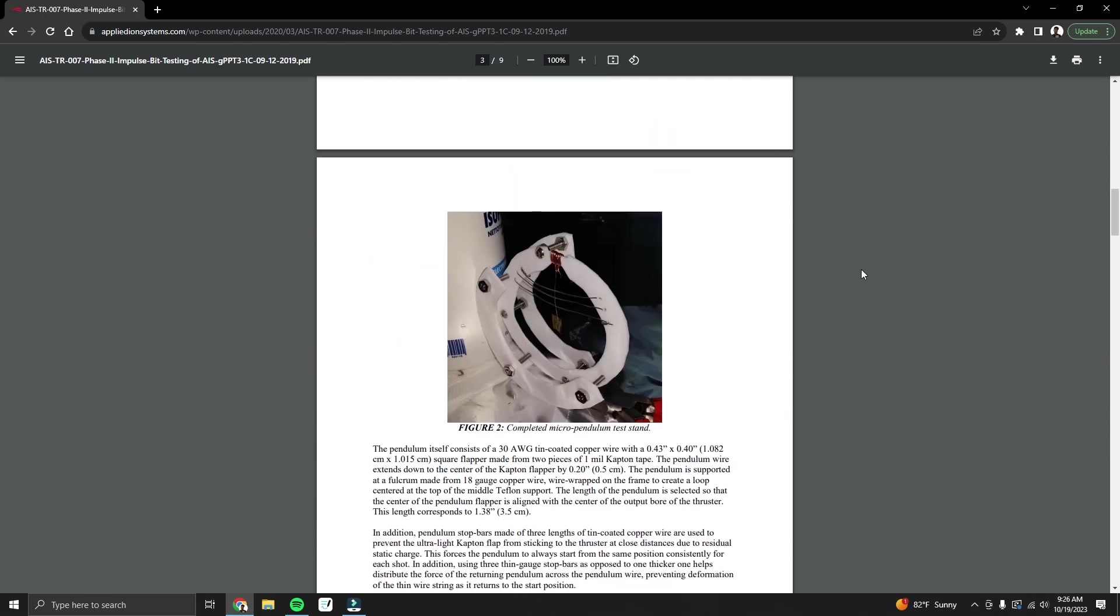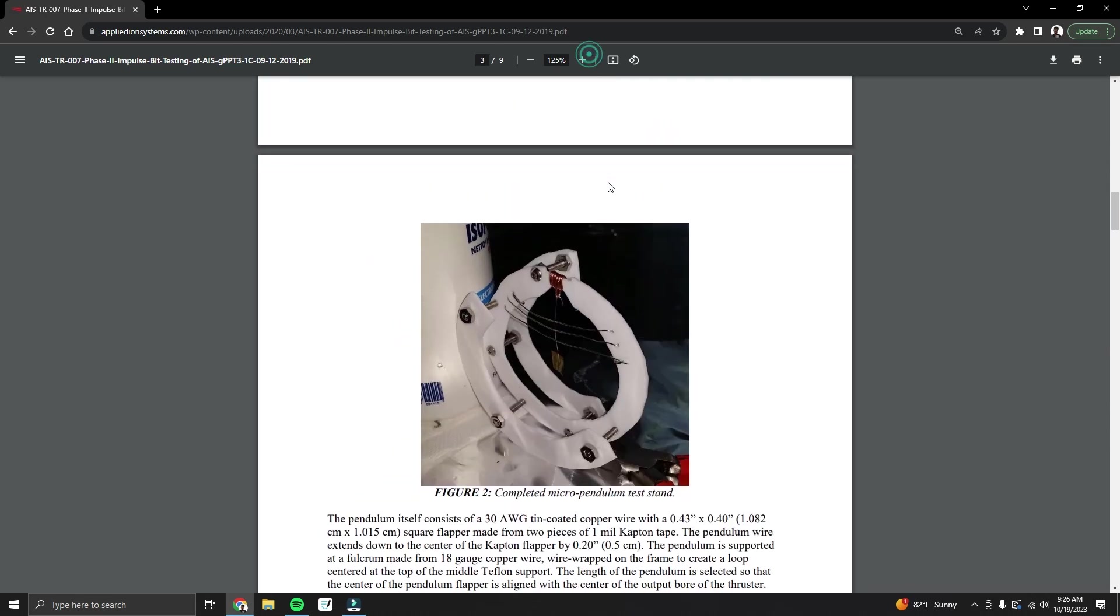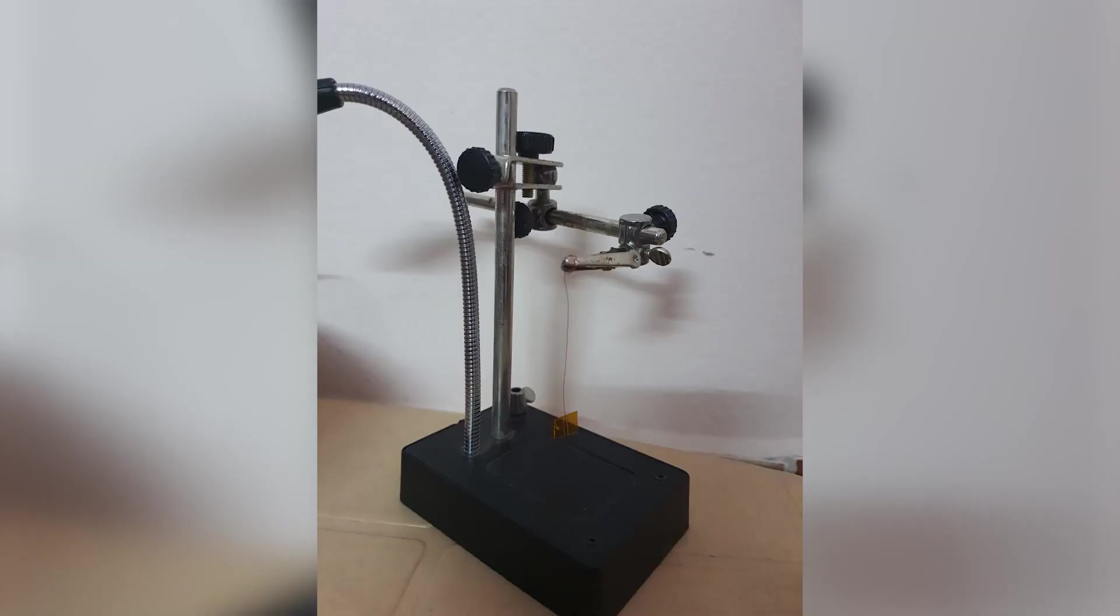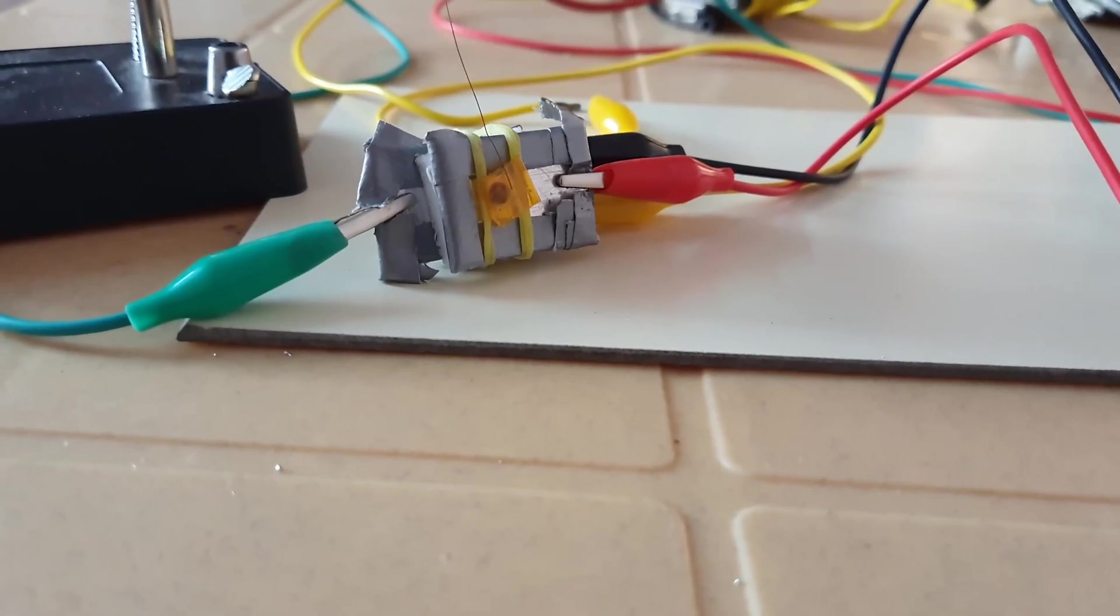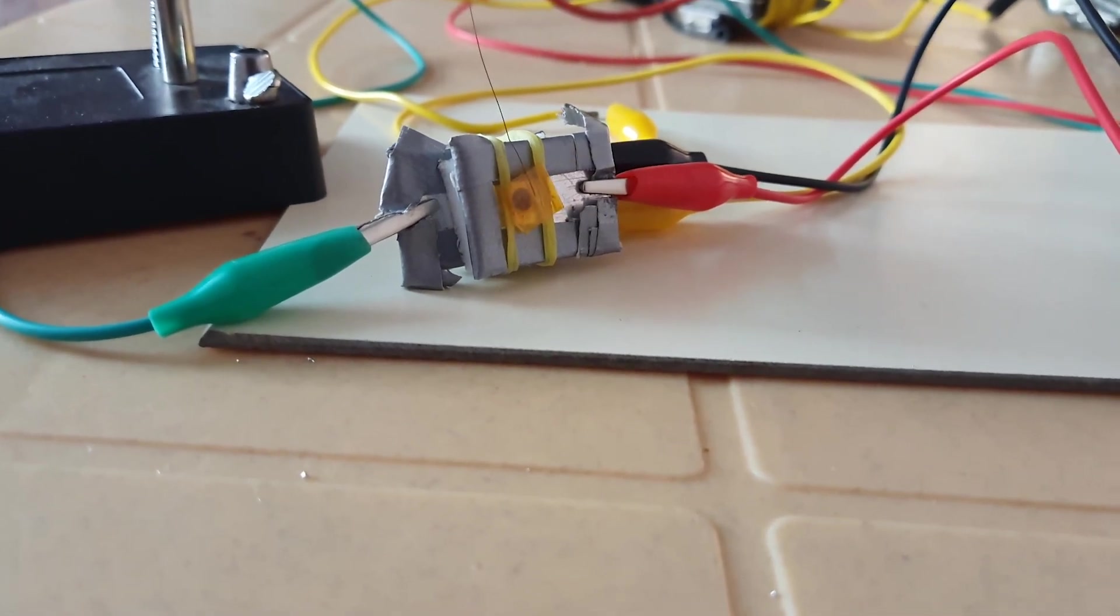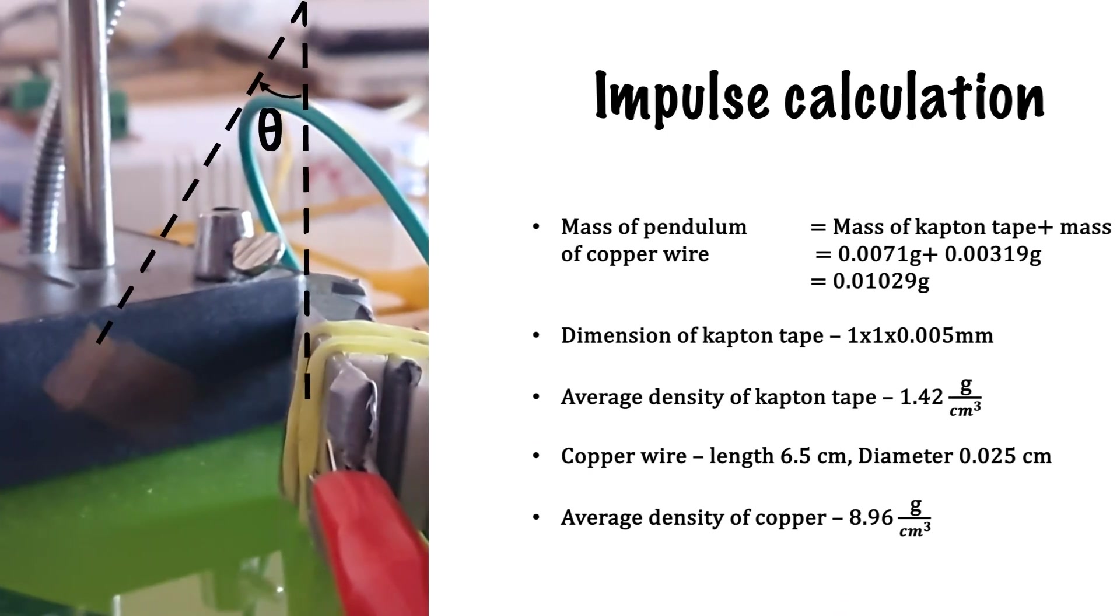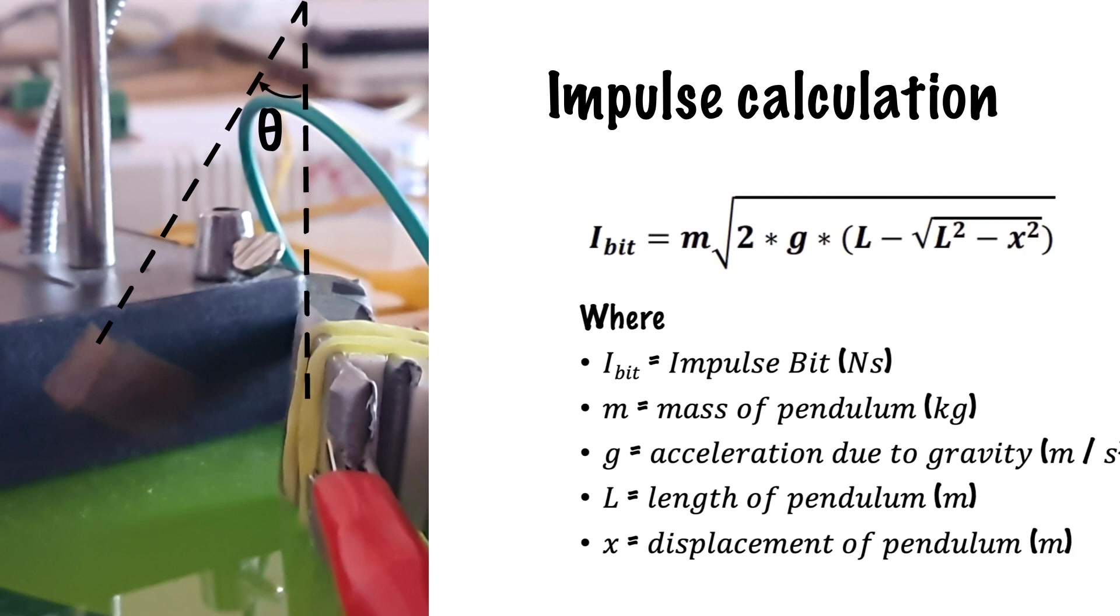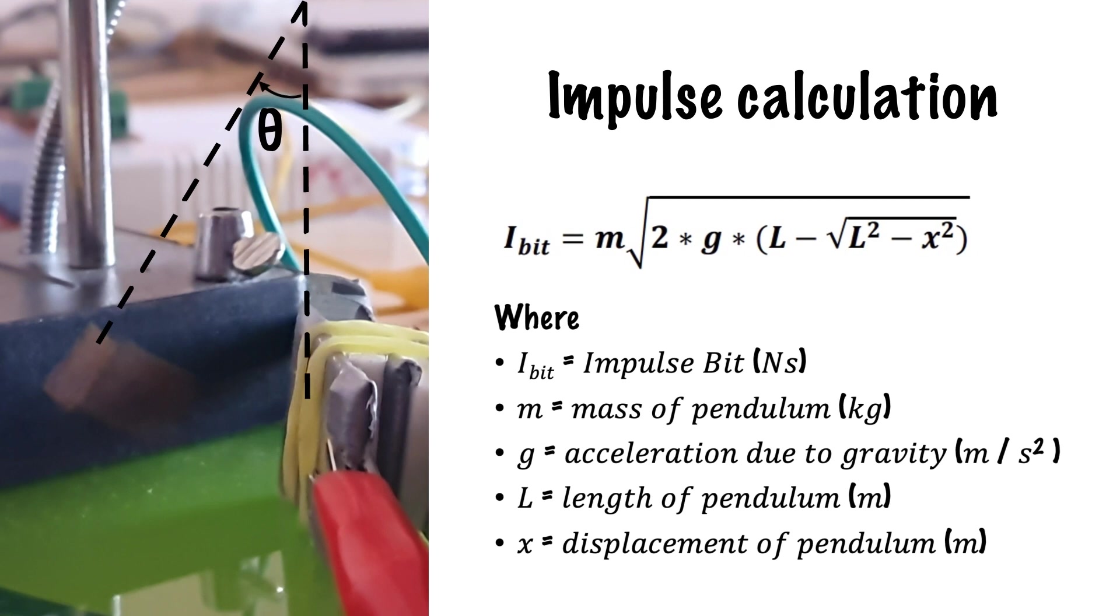It was time to gauge the actual thrust our setup produced. Drawing inspiration from Michael Brady's measurement system, we adopted a method using a simple pendulum mechanism. By attaching a strip of Kapton tape to a wire connector for the stand, the angle of displacement caused by the thrust can be observed. Using this angle and knowing the properties of our pendulum, we can determine the impulse bit using this equation. Impulse bit provides a measure of the cumulative effect of the thrust over a short duration. It is measured in Newton-seconds.